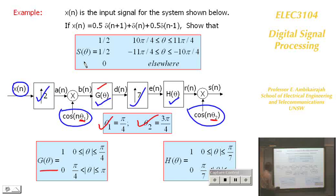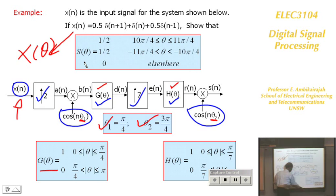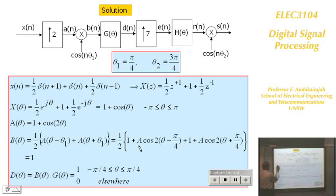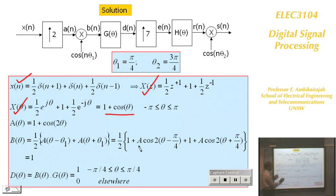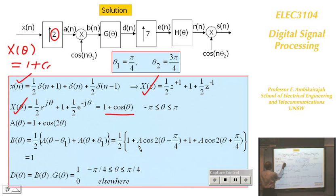Given Xn, find Xθ. Xn consists of specific values, so its z-transform gives a simple expression. Evaluating on the unit circle, Xθ = 1 + cos θ. This signal is then upsampled by 2, so the spectrum becomes Xθ with 2θ substituted, giving 1 + cos 2θ — the spectrum is compressed.